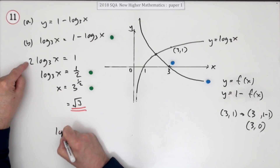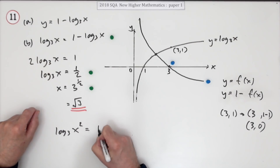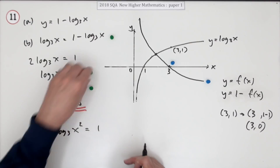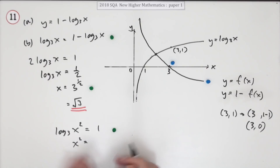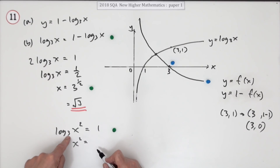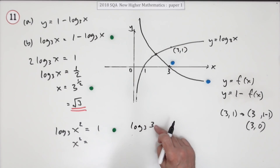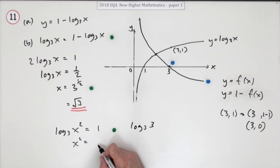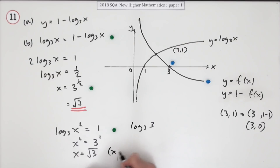An alternative method: at the step with 2 log base 3 of x equals 1, you could instead pop the 2 inside to get log base 3 of x squared equals 1 — that would earn a mark. Then x squared equals 3, since 1 equals log base 3 of 3, allowing you to equate them. It's simpler to just say the inverse of log base 3 is 3 to the power, giving x squared equals 3.